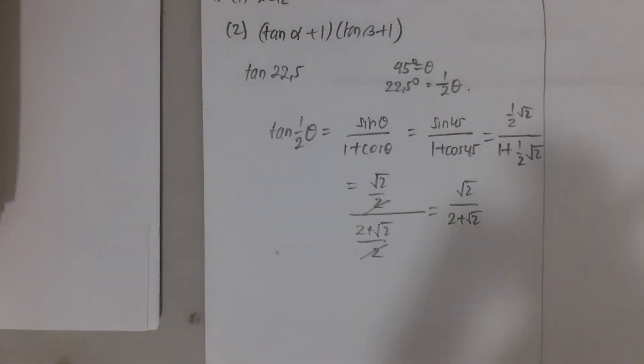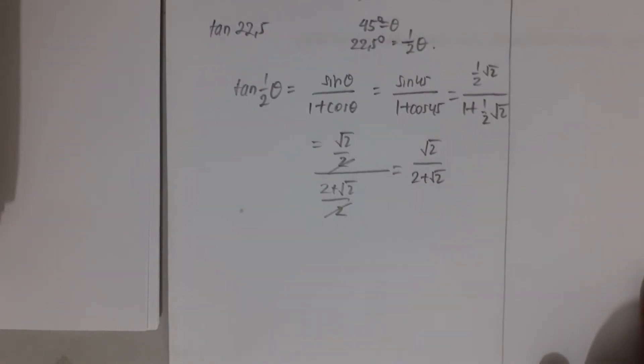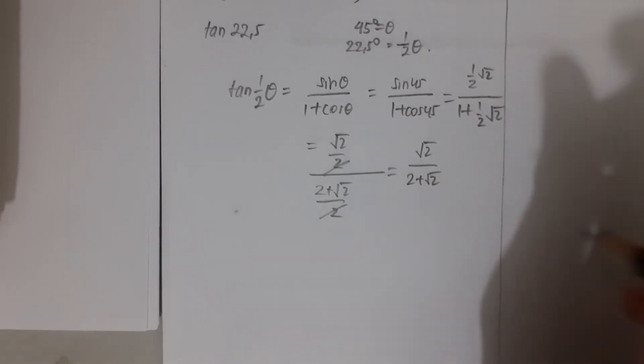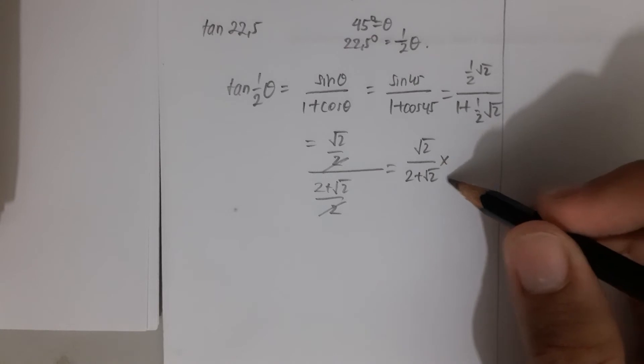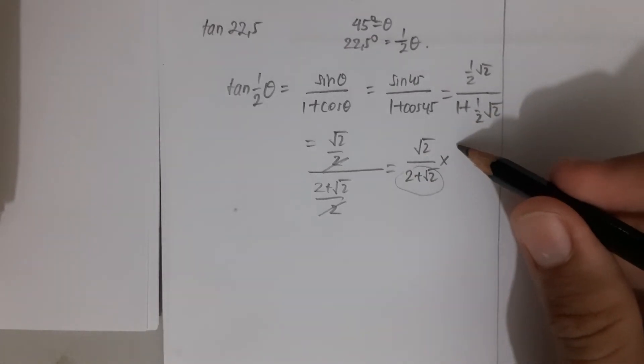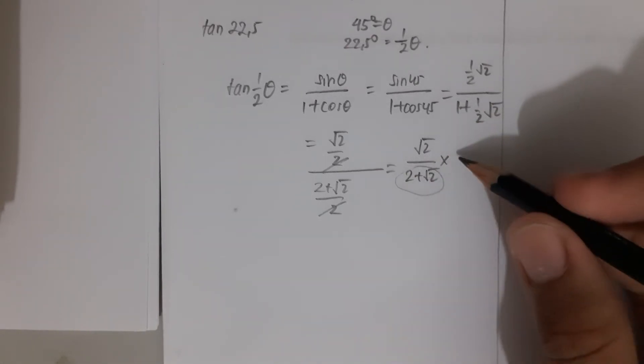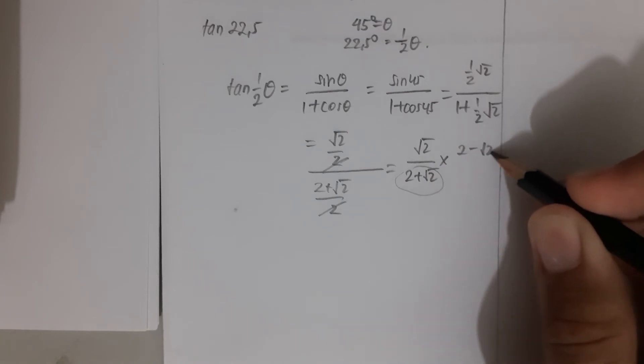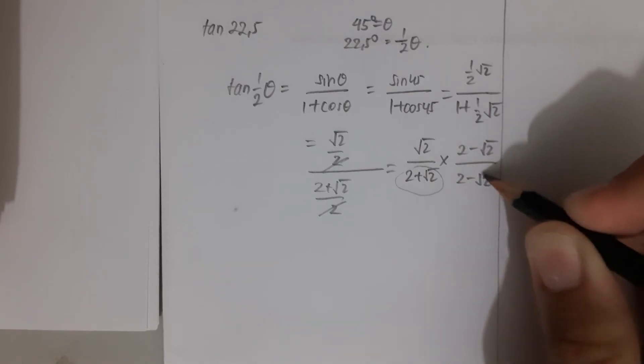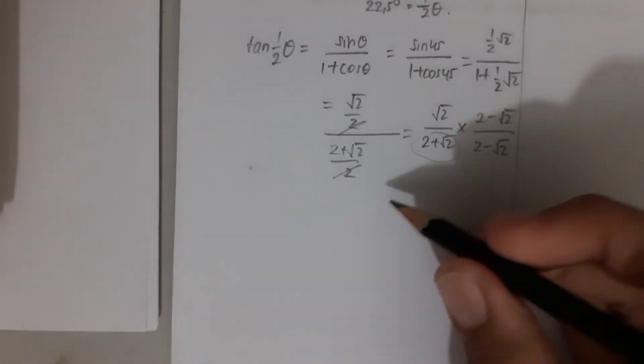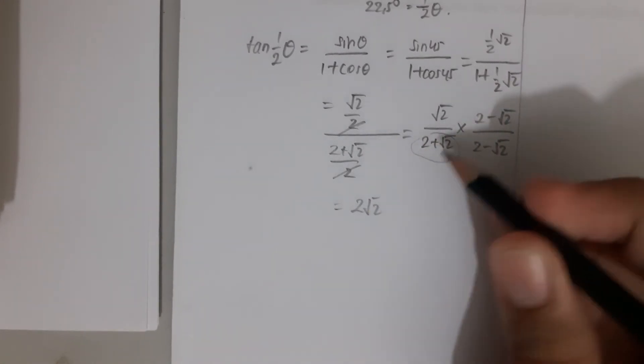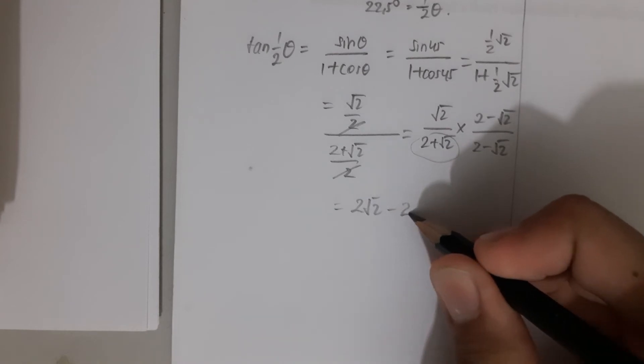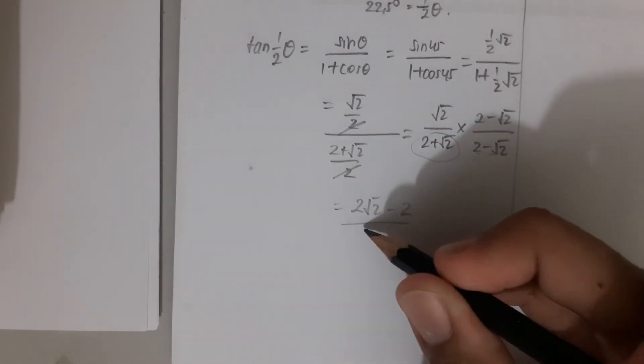The purpose is to ease the calculation. When we rationalize it, we multiply by the opposite of the denominator. If it is 2 + √2, it becomes 2 - √2. This equals (√2 × 2 - √2 × √2) / (4 - 2), which is (2√2 - 2) / 2.